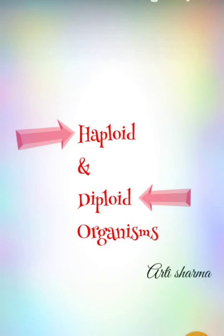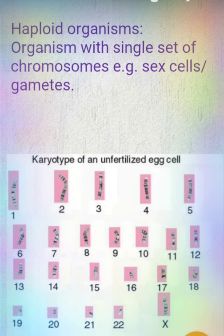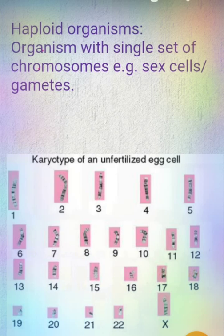Hello friends, my name is Aarti Sharma and in this video tutorial we are going to talk about haploid and diploid organisms. So first of all, haploid organisms — why are they known as haploid? Haploid stands for single set of chromosomes. The cells which contain a single set of chromosomes, meaning they carry a single copy of each chromosome, are known as haploid organisms.